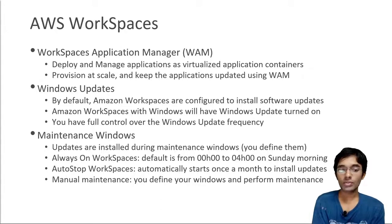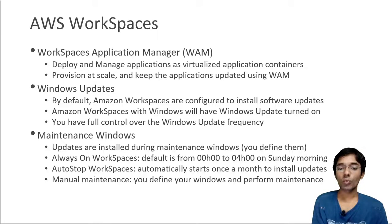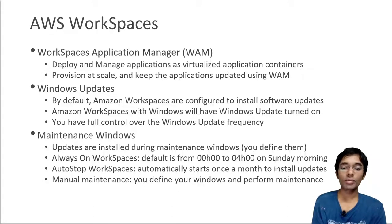During the maintenance window, the updates are going to be installed and you define the maintenance window that you want. For always-on WorkSpaces, by default the maintenance window is going to be between midnight and 4 a.m. on Sunday morning. Or you get auto-stop WorkSpaces — WorkSpaces that stop when users don't use them. In this case, the WorkSpaces automatically start once a month to install Windows Updates, whereas for always-on, this happens between midnight and 4 a.m. on Sunday mornings.